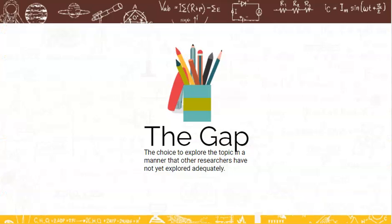So what is the gap? It's a choice to explore the topic in a manner that other researchers have not yet explored adequately. It's possible that researchers have looked at it in a similar fashion, but now it's our job to perhaps do a more thorough exploration of a particular issue that others may have just touched on lightly, or it could be just looking at a different group, whether it be gender, ethnicity, age groups, or other social identifiable designations that have not been thoroughly addressed by the existing body of knowledge.